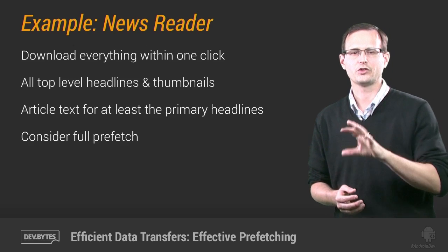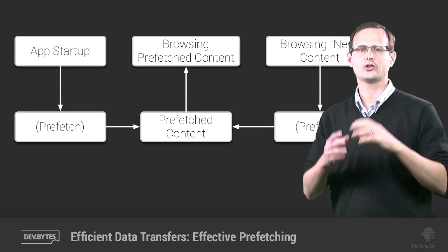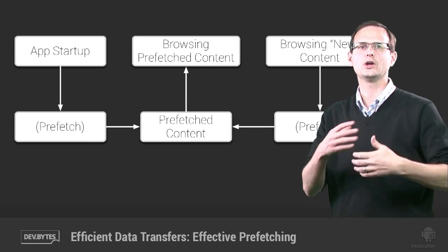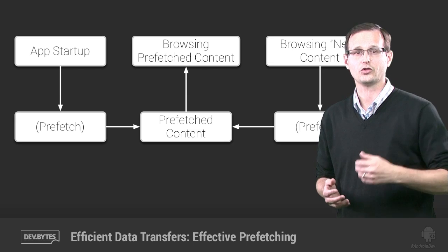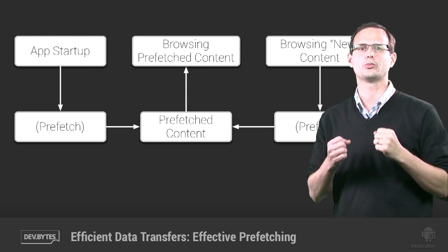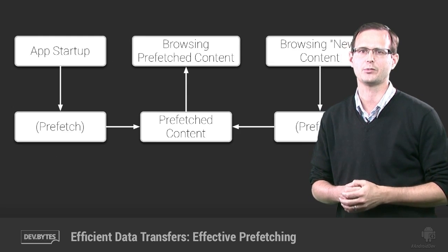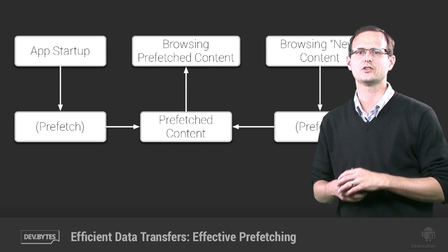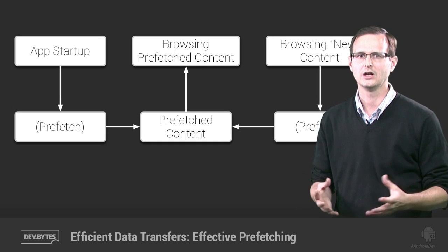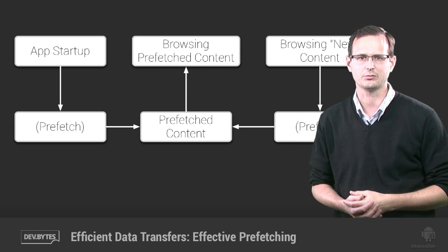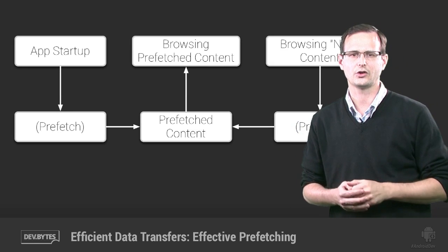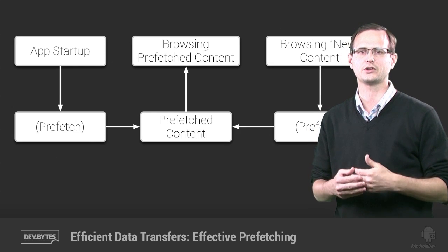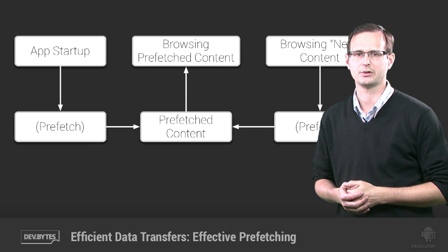A much better approach is prefetching a reasonable amount of data at startup, prioritizing the first set of news headlines and thumbnails likely to be displayed, and continuing on with the remaining headlines, thumbnails, and article text. It's also important to ensure that your prefetching doesn't delay app startup by making the app wait for the prefetch to complete fully before letting the user interact. Be sure to process all of your downloads in the background using intent services and libraries like Volley to help process that data progressively and concurrently, and therefore minimize startup latency.